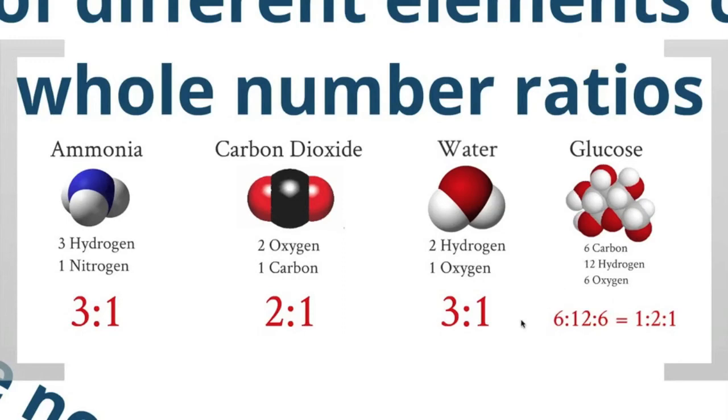Six carbon atoms, 12 hydrogen atoms, and six oxygen atoms in the glucose molecule. Glucose is a sugar. So, the ratio is six to twelve to six. When you reduce that down to the simplest terms, the ratio is one to two to one.